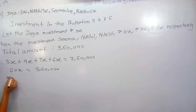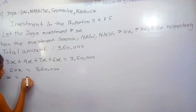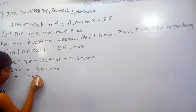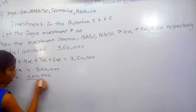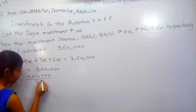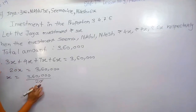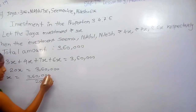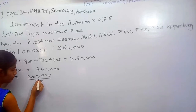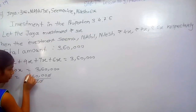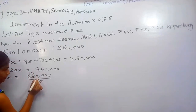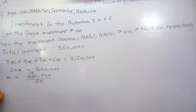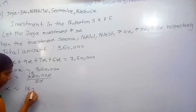x is equal to 3,16,000 upon 20. Cancelling the zeros and simplifying, x is equal to Rs. 15,800.